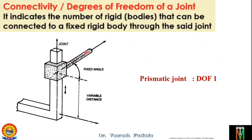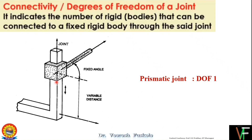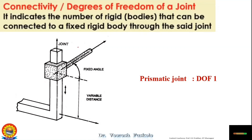To connect the two links we need a joint, as we saw in the first slide. So if that joint is connecting one link, it will be the fixed link — that is connectivity one. If the joint can connect one link here and one more link here, then this will be connectivity two. How many other links the joint can connect gives you the connectivity.